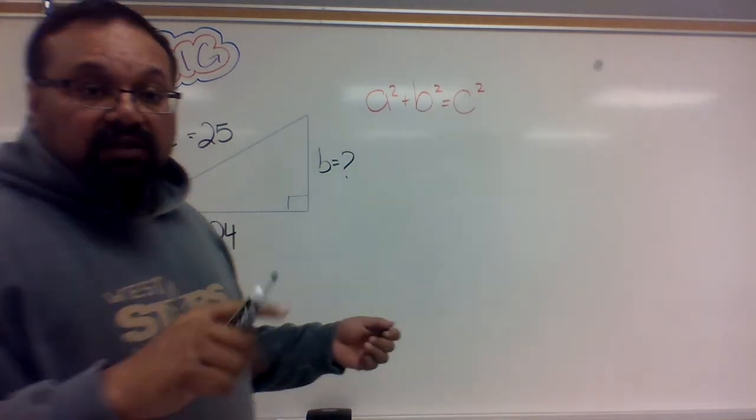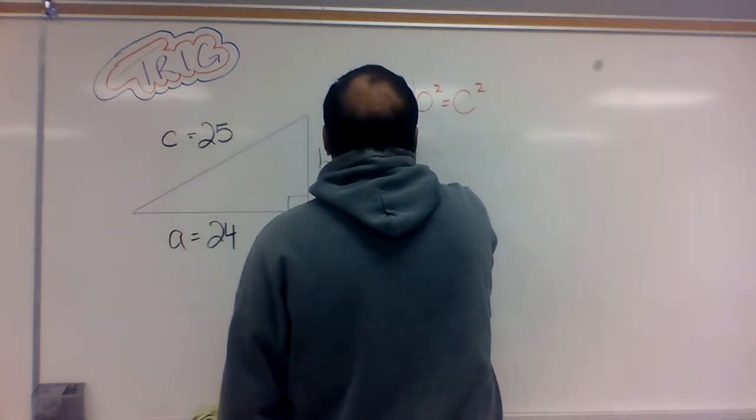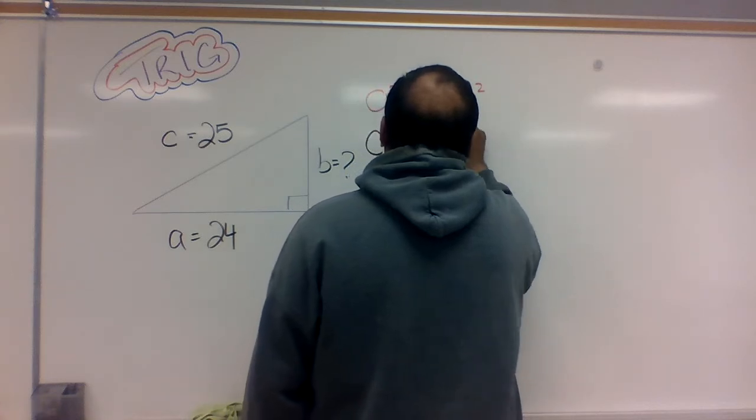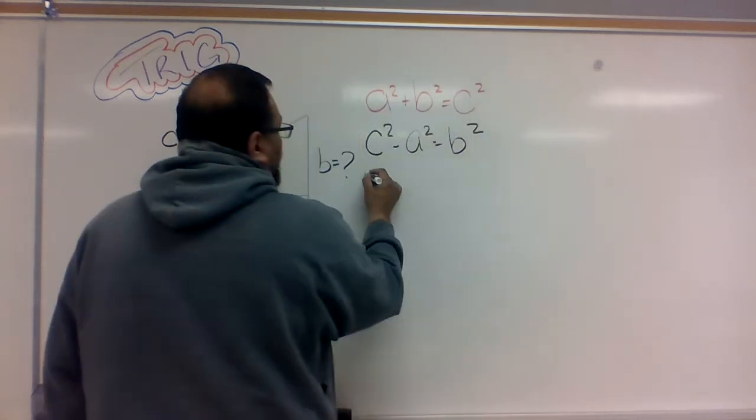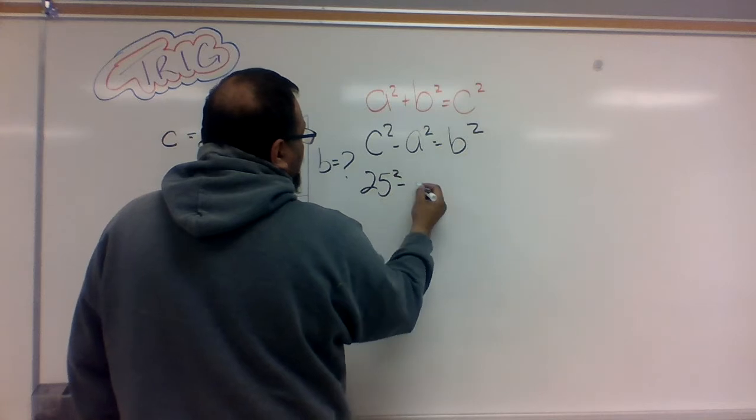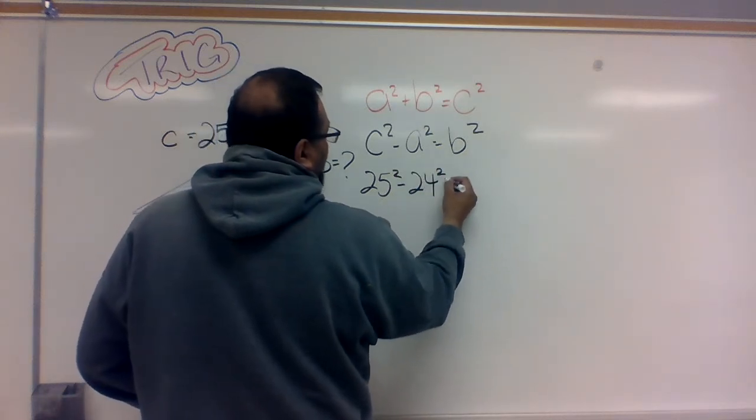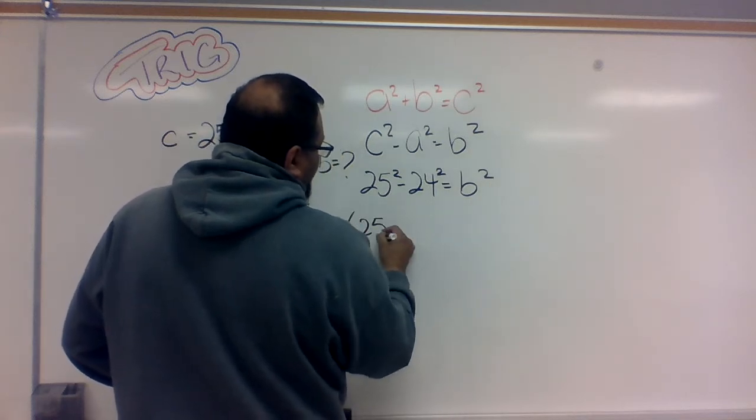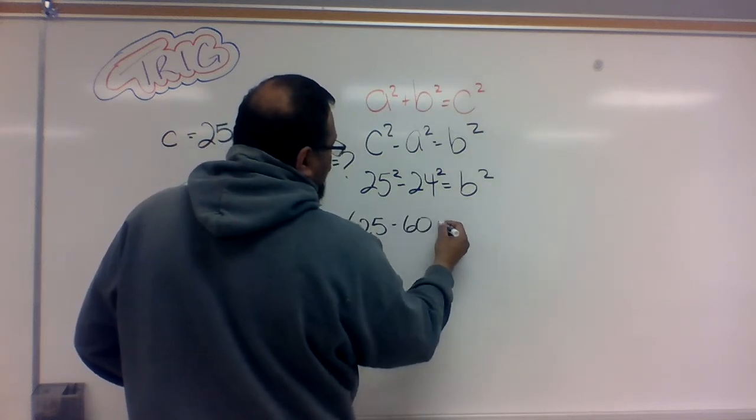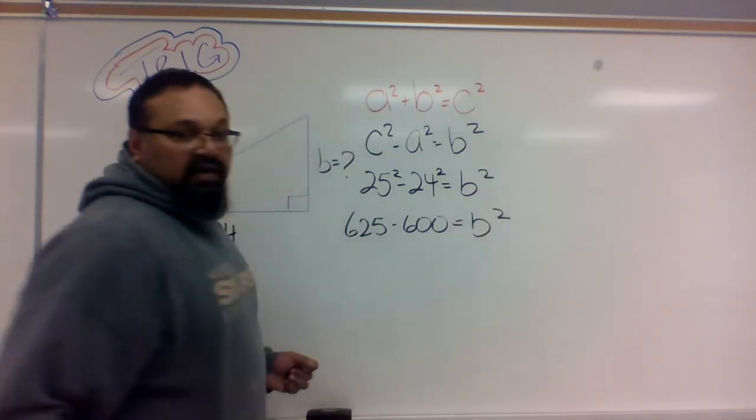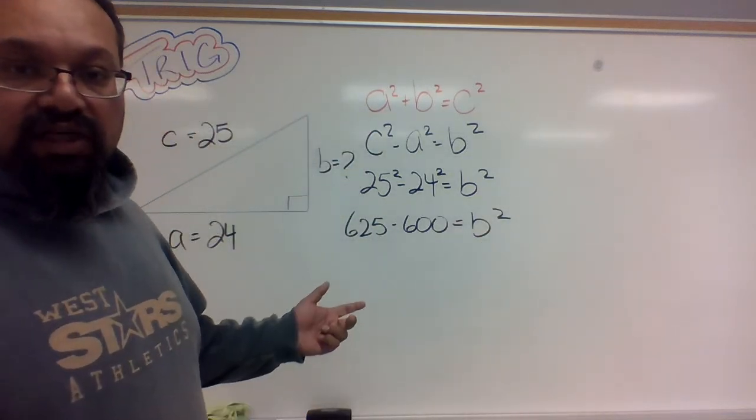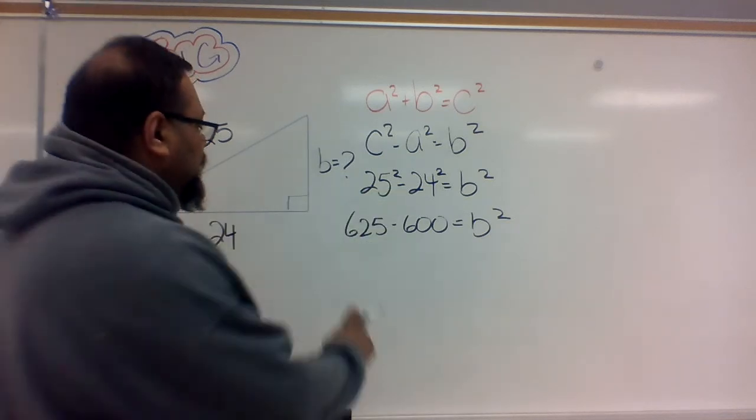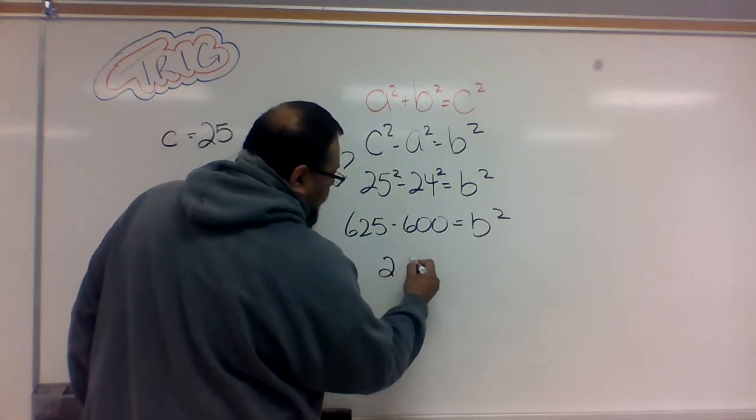Manipulate the formula first, as always. We're going to have C squared minus A squared equals B squared. 25 squared minus 24 squared equals B squared. This is 625 minus 600. We're still on track. Now finally, we do the subtraction. Should have 25 left over.